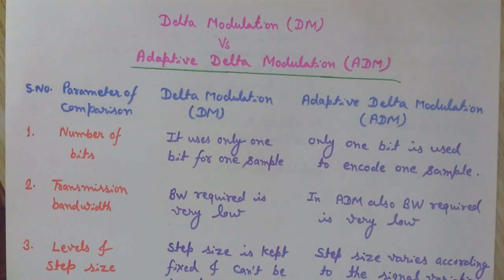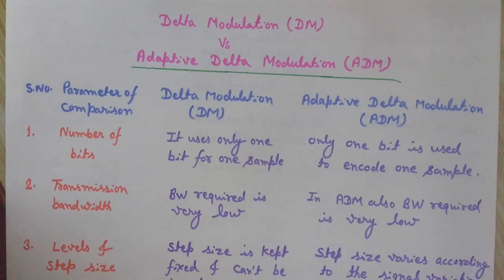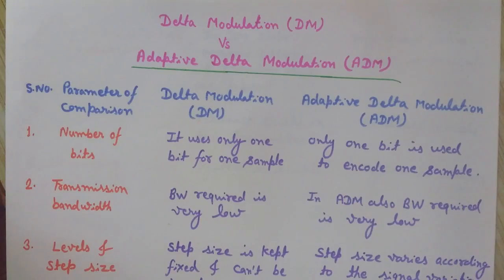In Delta modulation we transmit only one bit per sample. The present sample value is compared with the previous sample value, and the result — whether the amplitude has increased or decreased — is transmitted. If the difference is positive, then the value of the approximated signal is increased by one step, that is by the value of Delta.